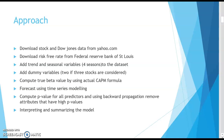After computing the true beta value using the actual CAPM formula, we will model using an auto-regressive model. We will compute the p-value for all the predictors and use backward propagation to remove attributes that have high p-values. We will continue this iteratively until we reach a generalized linear equation where we will be able to interpret and summarize the model.